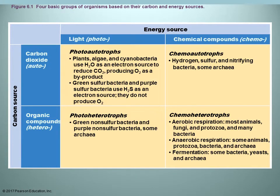This table combines all of that together. For energy source, looking across the top columns: if an organism gets its energy from light, it's known as a phototroph; if it gets its energy from chemical compounds, it's known as a chemotroph. In terms of carbon source, looking at the rows: if it gets its carbon from carbon dioxide, it's an autotroph; if from organic compounds, it's a heterotroph.